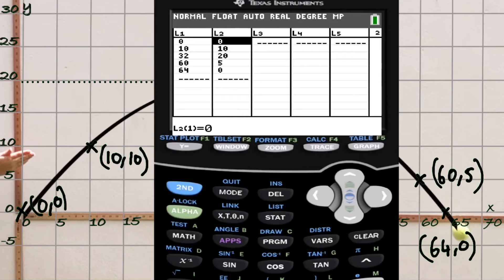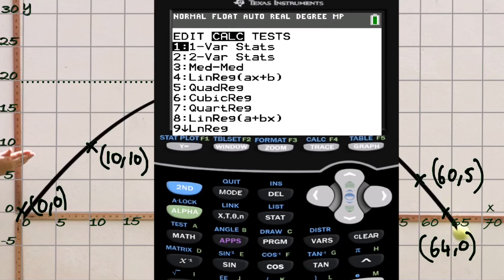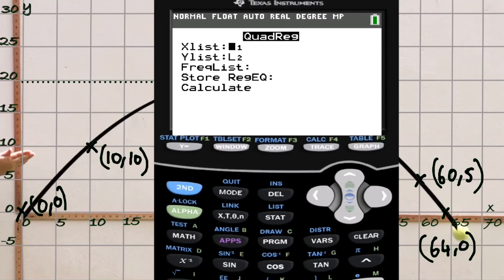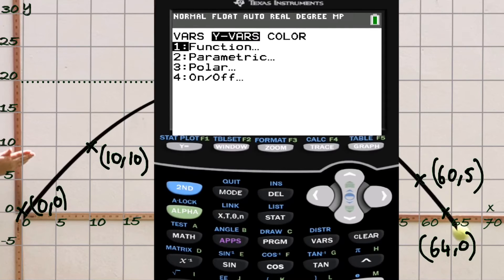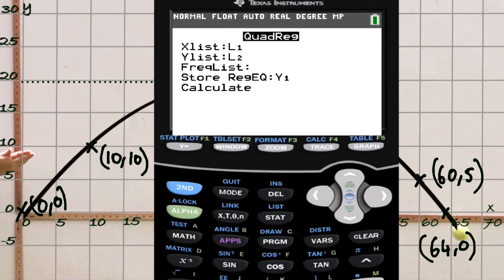We know it's quadratic because the curve is parabolic. We'll go back to STAT, then CALC. We want to calculate number five, which is quadratic regression. X list was L1, Y list is L2. For store regression equation, we'll press VARS, then Y-VARS, then function, then function one. We're going to store that equation, the regression equation, in function one, Y1. Let's calculate.